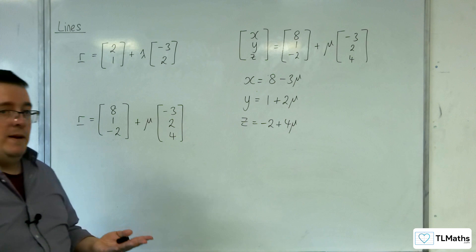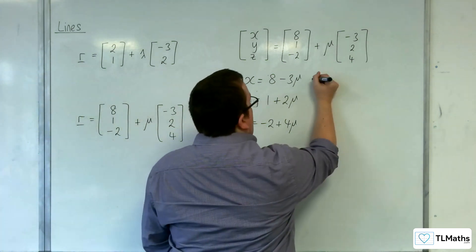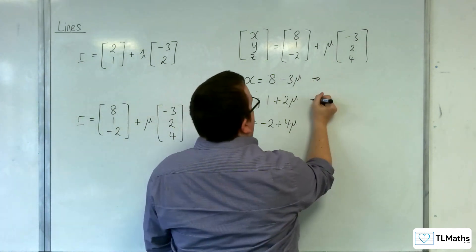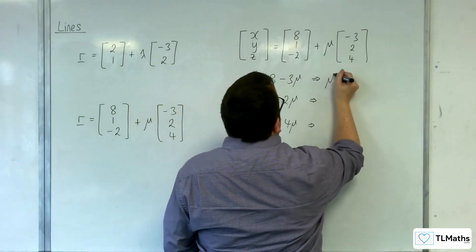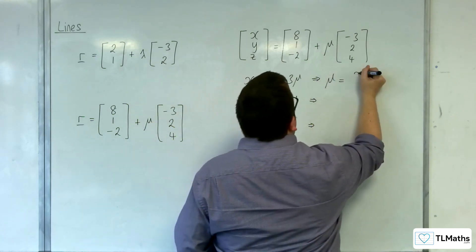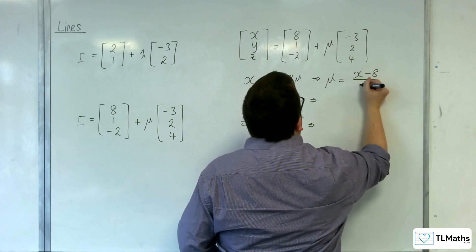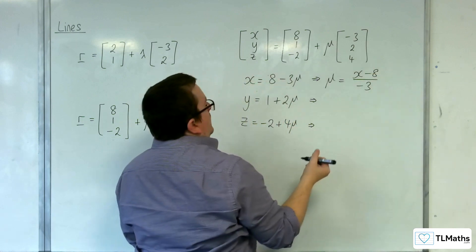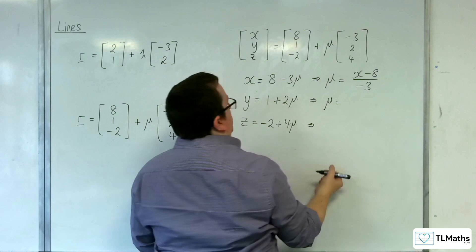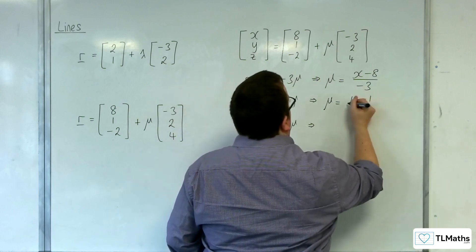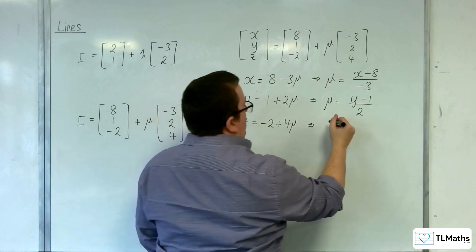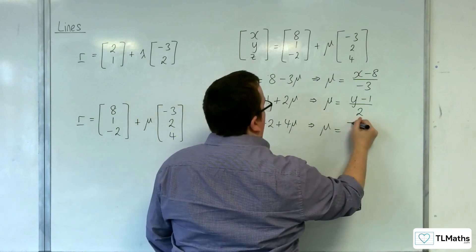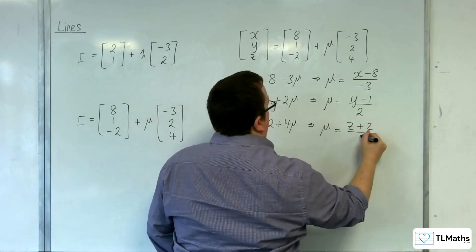So, we've got 3 parametric equations. We can rearrange each of these to get mu equals in the same way as we did before for the lambda. So, mu is equal to subtract 8 from both sides and divide through by minus 3. And here we will subtract 1 from both sides and divide through by 2. And here we will add 2 to both sides and divide through by 4.